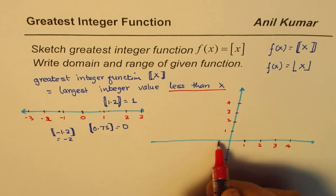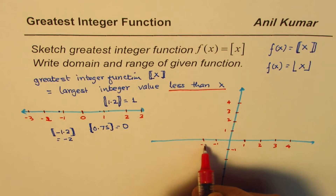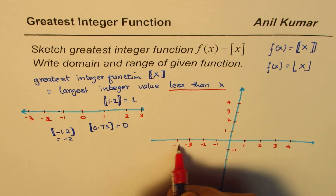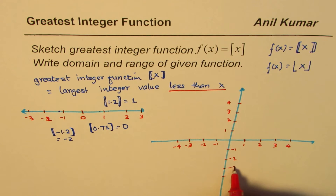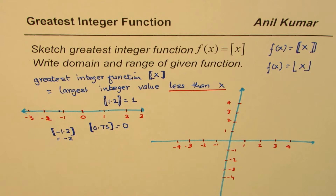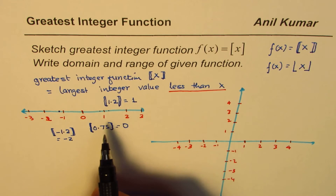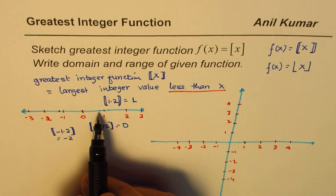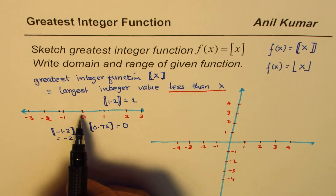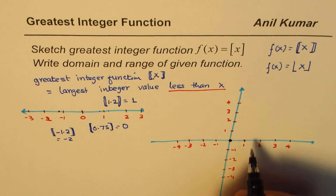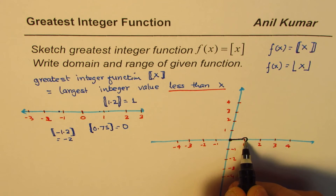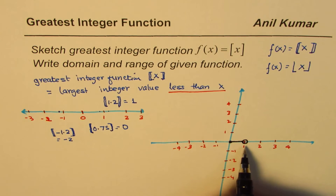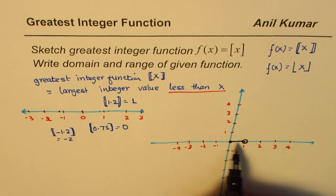And on the negative side: minus 1, minus 2, minus 3, minus 4. Now let's sketch the greatest integer function. When a value is between 0 and 1, on the left side it rounds to 0 — the greatest integer value is 0. So that interval is filled up and we get a horizontal step there. Any real number between 0 and 1 gives a value of 0.